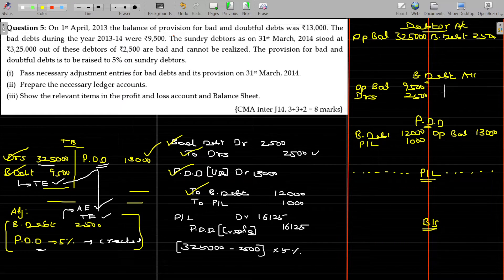In bad debt account, by PDD, by PDD, the value being 12,000. In P&L account, in P&L account, 1,000 should be in the credit side, PDD. And in P&L account, 16,125 should be in the debit side, PDD.